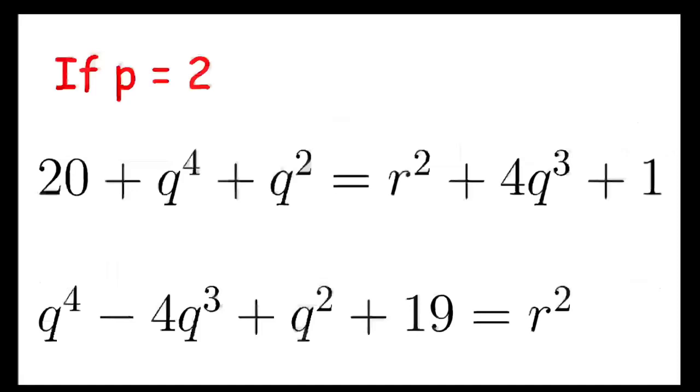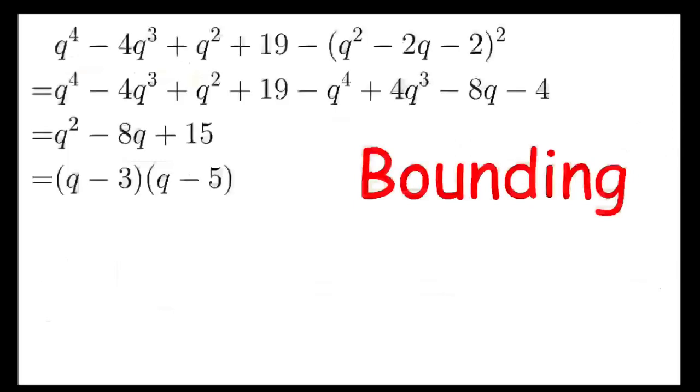So here comes the magic. I'm going to construct two perfect squares in q, which are both polynomials, such that it makes like a sandwich, having one square smaller than this polynomial, and the other square is larger than this polynomial.